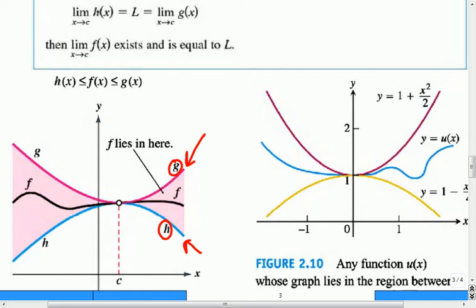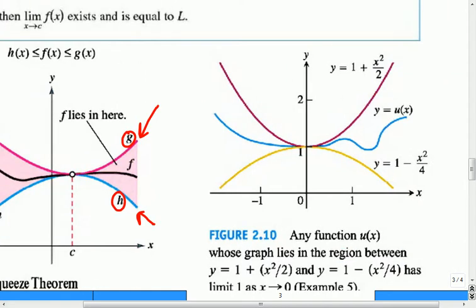So here's an example. This function is an unknown one. It's just called u of x. You don't know what it is, but because you know that it goes between these two it will have the same limit. So the limit as x approaches 0 of u of x is going to be equal to 1, the same as the other two. So that's the goal is that we find simpler functions to evaluate and we can squish them between.